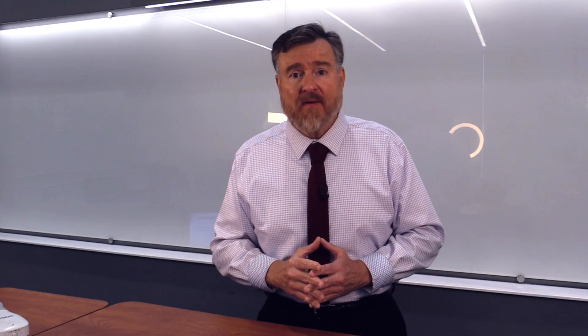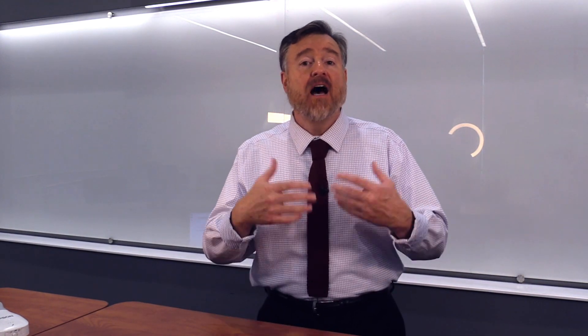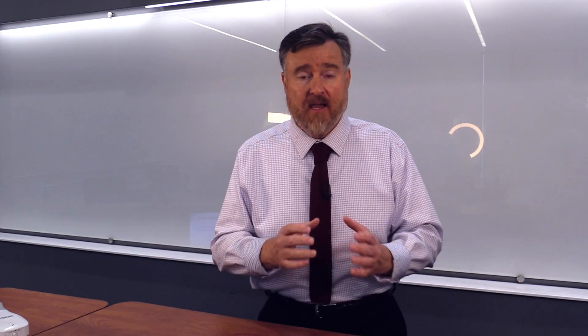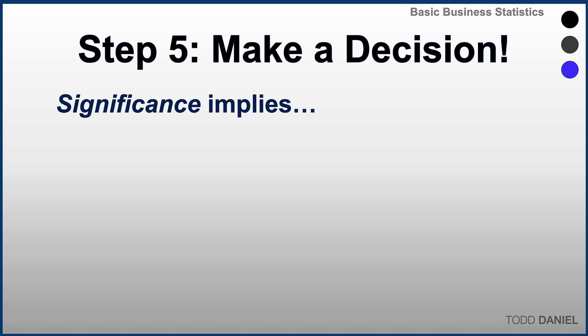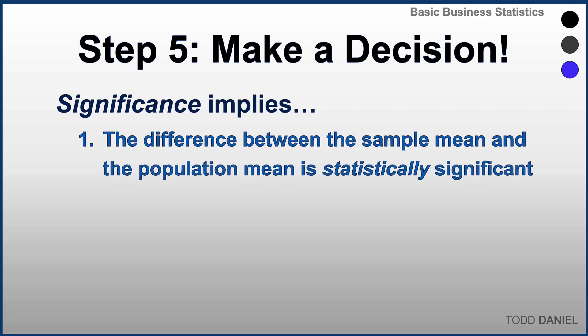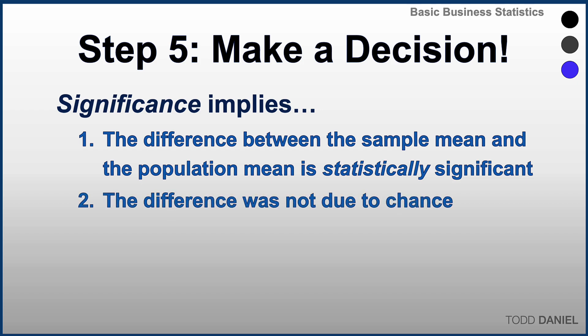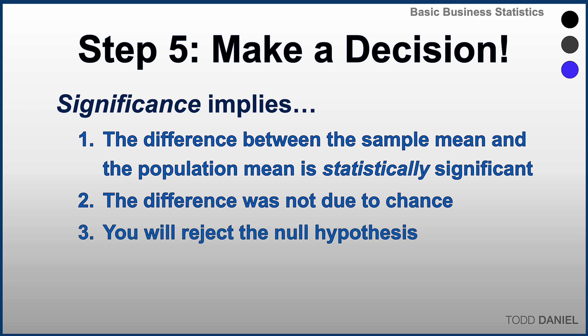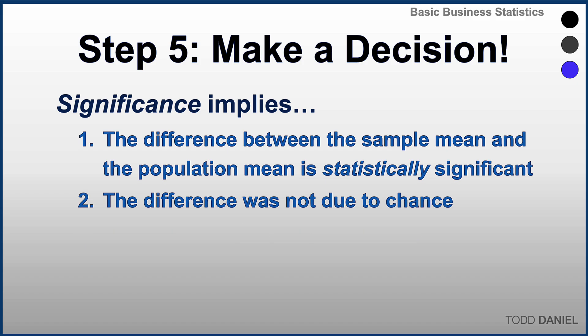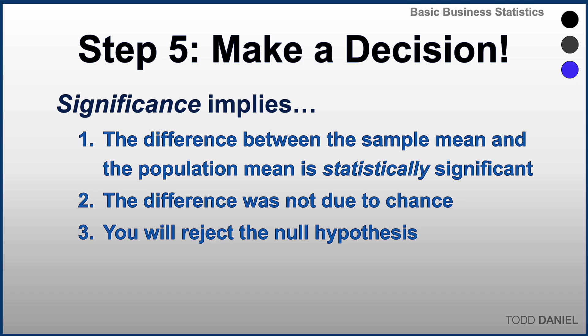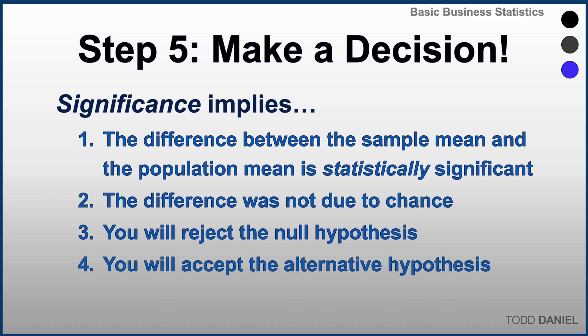When we reject a null hypothesis, we are establishing that we have exceeded our criterion for statistical significance. Statistical significance means that the difference between the sample mean and the population mean is not just different, but statistically significantly different. Significance means that difference was not due to chance, but the evidence suggests it was due to an effect. We have therefore rejected the null hypothesis — the hypothesis that stipulated there is no difference — and accepted the alternative hypothesis, which says there is a difference.